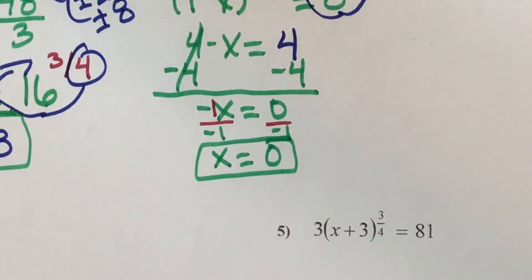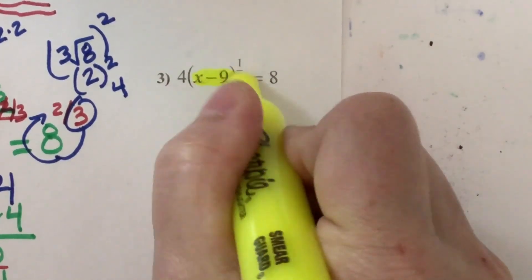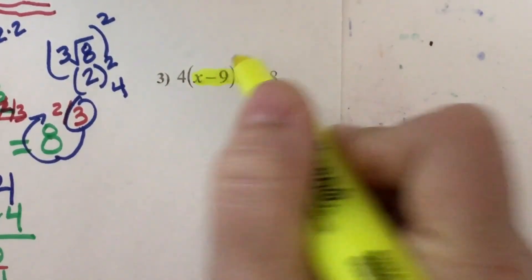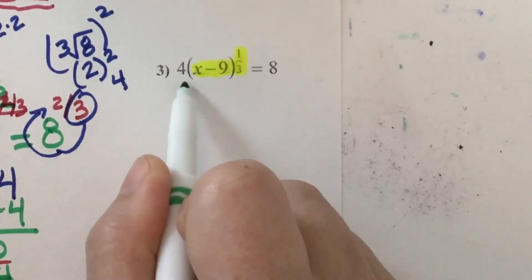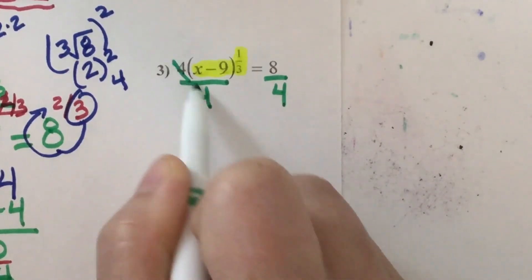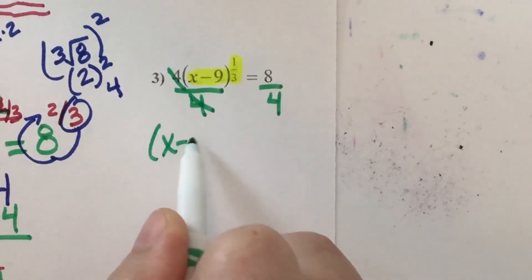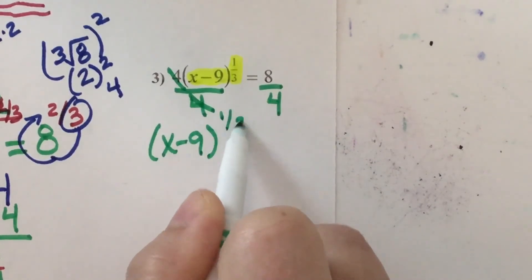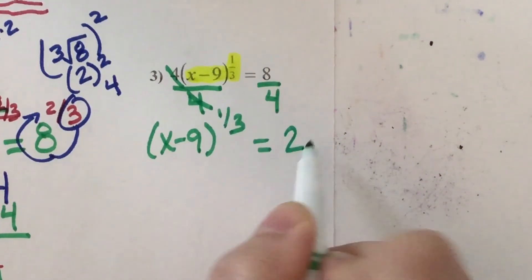I don't think anybody likes getting an answer of 0, but that's the answer. Number 3: the variable that's in parentheses with the exponent needs to get by itself. How will I get rid of the 4? I'll divide — since it's smushed with the parentheses, I have to divide by it. I'm dividing both sides by 4. The (x minus 9) raised to the 1/3 comes down, and 8 divided by 4 makes 2.